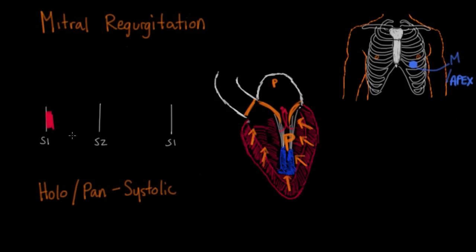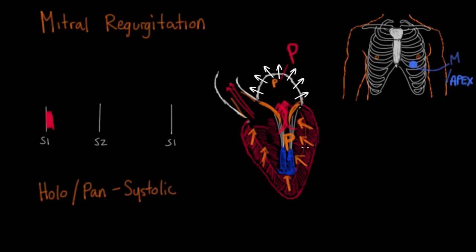Right as the mitral valve tries to close it doesn't close fully, so because the pressure is higher in the left ventricle than the left atrium, you actually start that murmur right at S1. As soon as the heart begins to eject blood the aortic valve opens, but because the pressure remains higher in the ventricle than the atrium the whole time, you get flow through this regurgitant valve throughout the entire cycle. In chronic mitral regurgitation, the atrium actually gets bigger and dilates, becoming more compliant so it can accept blood coming back into it at a lower pressure.